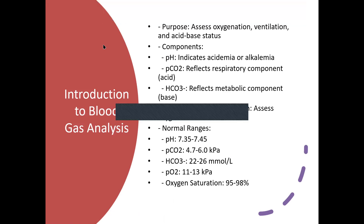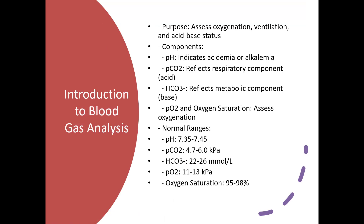It's quite important to be able to interpret the blood gas quickly and effectively because you can get a blood gas within a minute or two depending on where the machine is. So what is the purpose of a blood gas? The purpose is to determine oxygenation — whether your patient is receiving enough oxygen, whether they're ventilated properly, and of course the acid-base status.